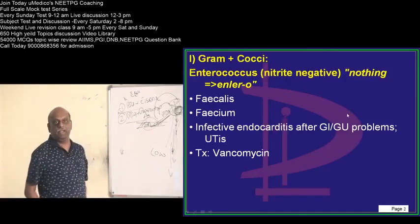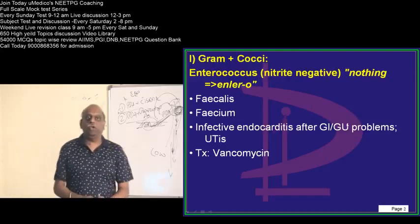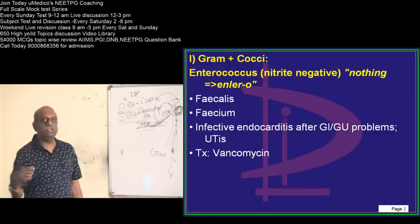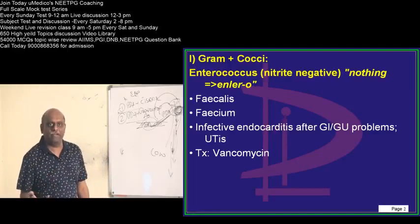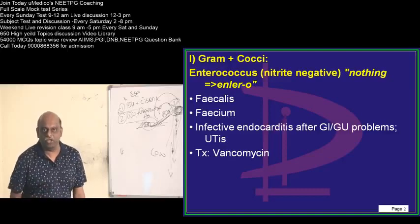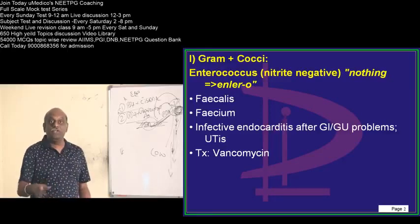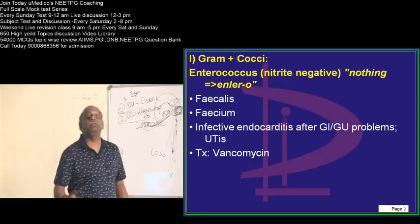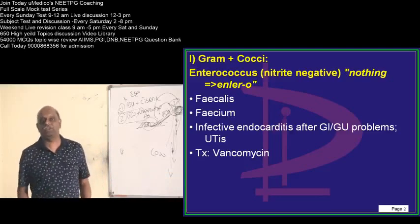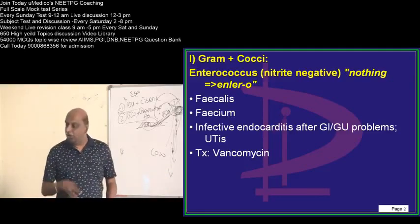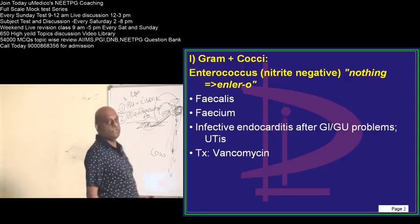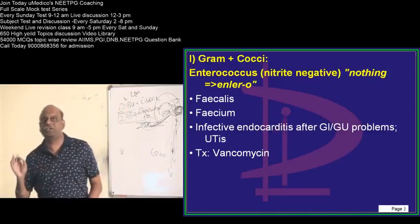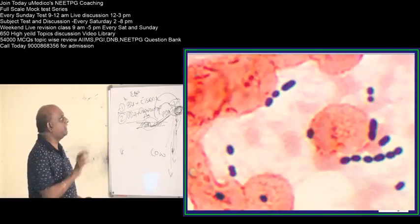Enterococcus leads to infective endocarditis, especially if you are having any genitourinary intervention. If you happen to have a surgical procedure entering into your genital tract or a GI problem, it typically leads to development of infective endocarditis by entering the bloodstream. It is also responsible for urinary tract infections. The important drug of choice for enterococcus — you will remember — is vancomycin.